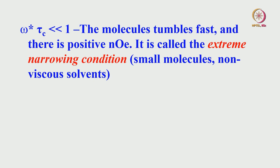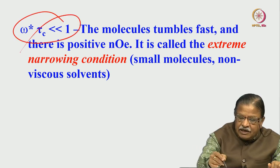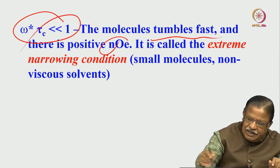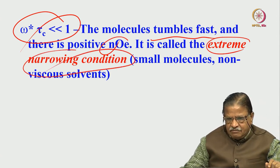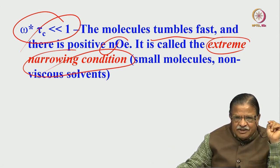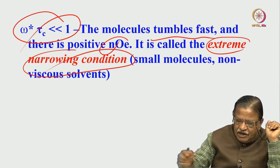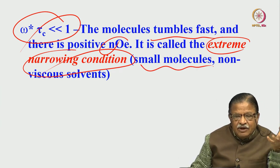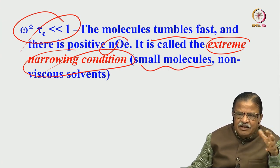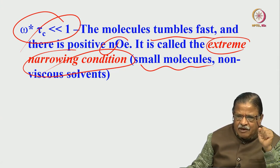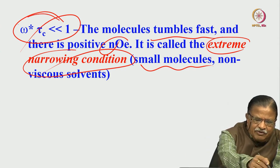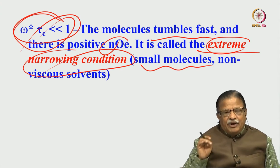When ω₀τ_c << 1, molecules are tumbling very fast — this gives positive NOE. This condition is called the extreme narrowing condition. It is experienced for small molecules in non-viscous solvents — because in a viscous solvent, molecular mobility is restricted and the molecule cannot tumble very fast.